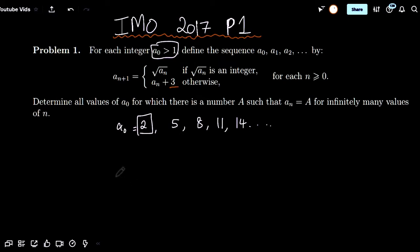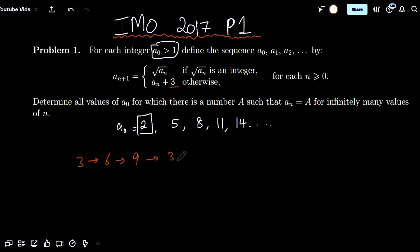What we're going to do is just try out some cases. We did try out 2 — it seems to keep on increasing. If we try a0 equals 3: it's not a square, so I add 3, I get 6. Not a square, add 3, I get 9. But 9 is a square — taking the square root gives 3. And it cycles back! So a0 equals 3 is one solution.